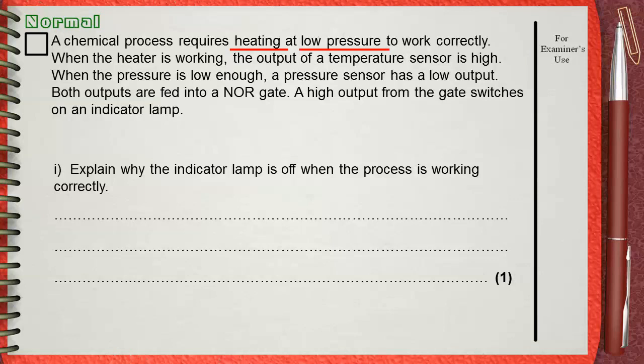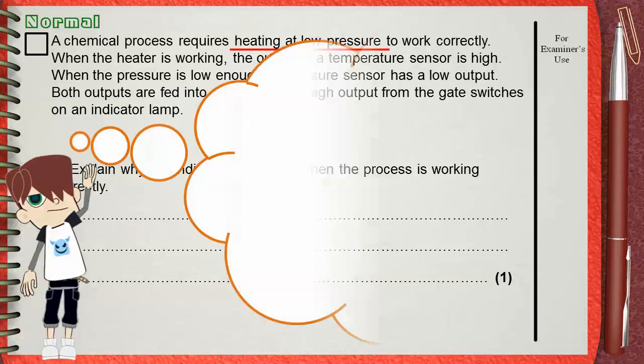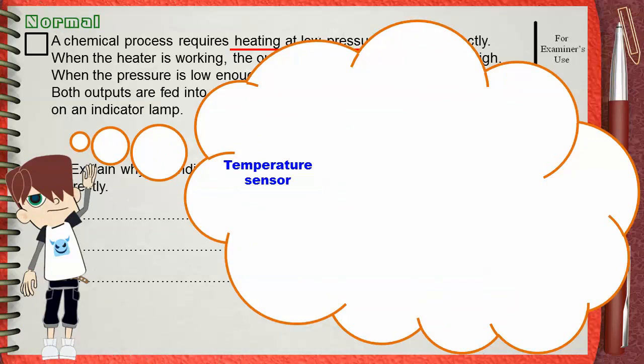So let's imagine the process. We have a temperature sensor, and we have a pressure sensor. The question says that both sensors are fed to a NOR gate, which controls the work of a lamp.